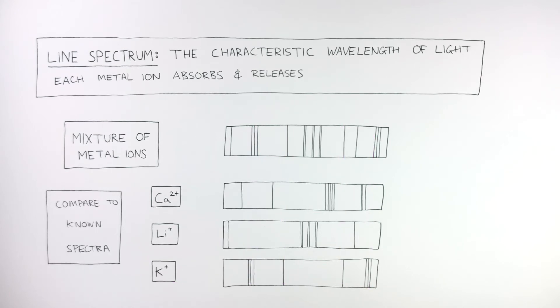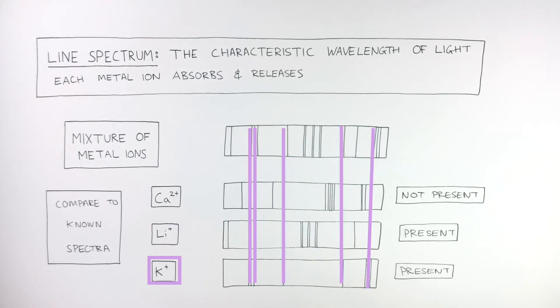But if these lines do not match up perfectly, like here, then that metal ion is not present. Calcium is not present because the lines do not match up, whereas lithium and potassium are both present because the lines do match up.